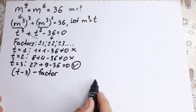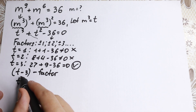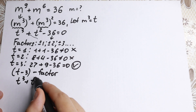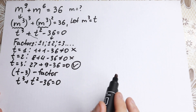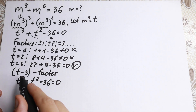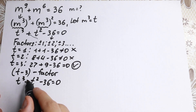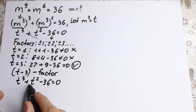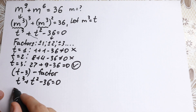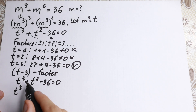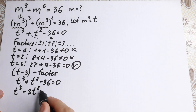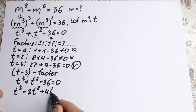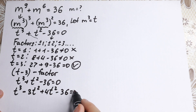Now we have t³ + t² − 36 = 0 and we know (t − 3) is a factor. I want to show you a really good method. We have t², and I want to write that t² as (−3t²) + (4t²), then bring in the −36.